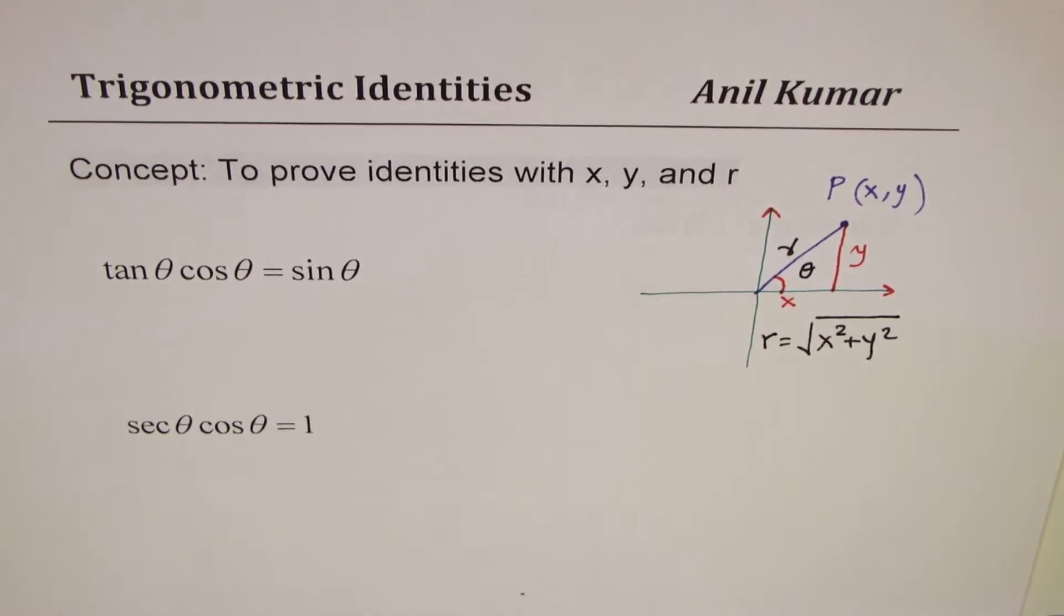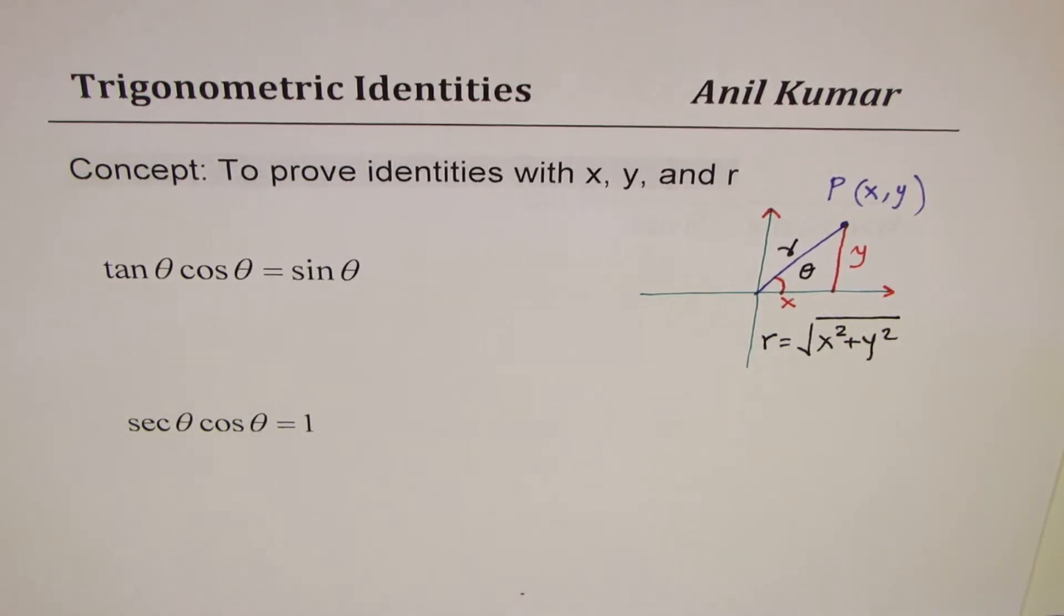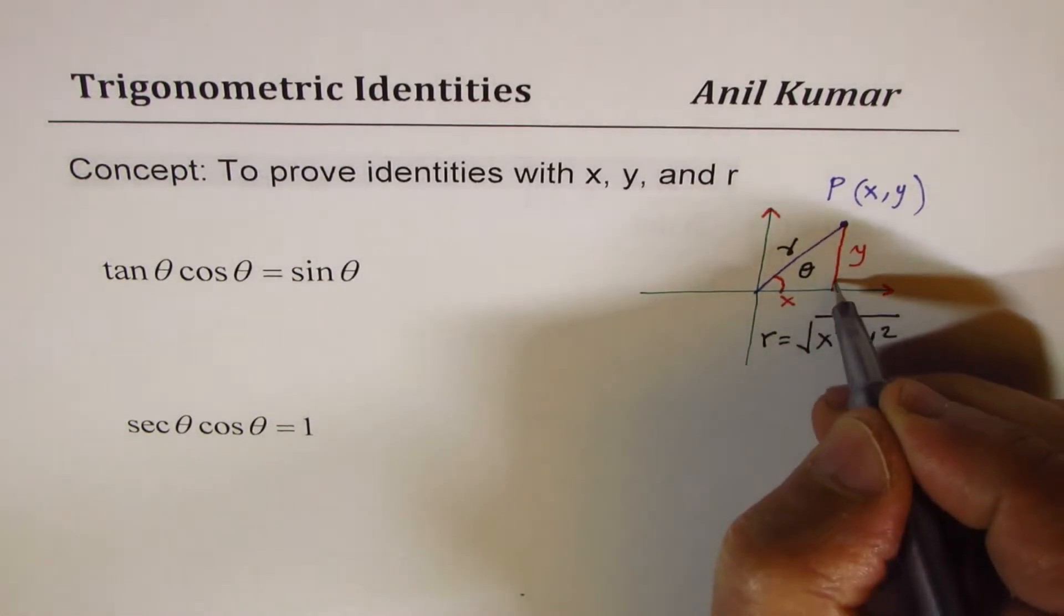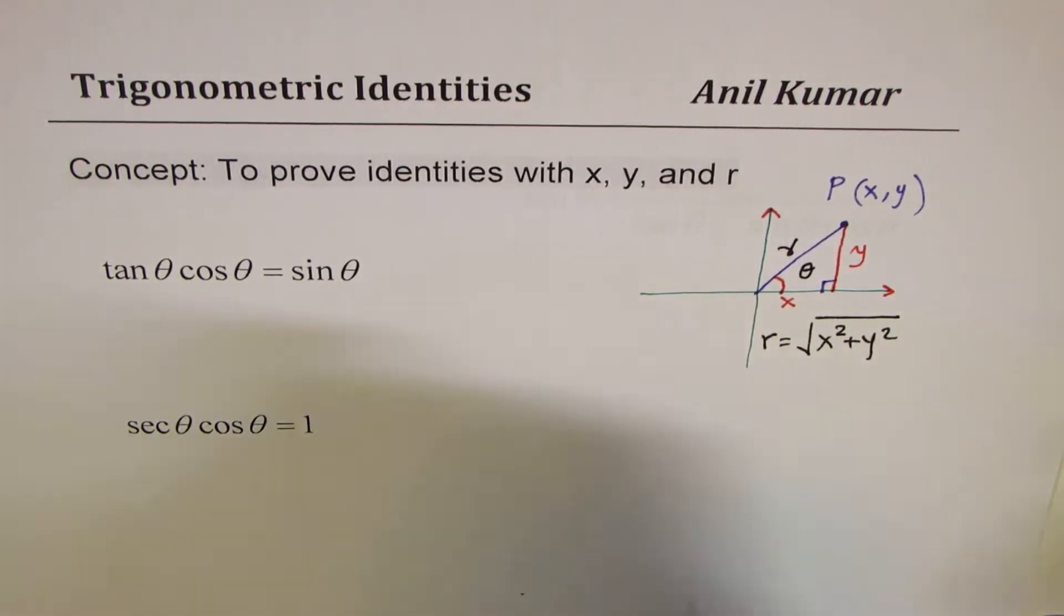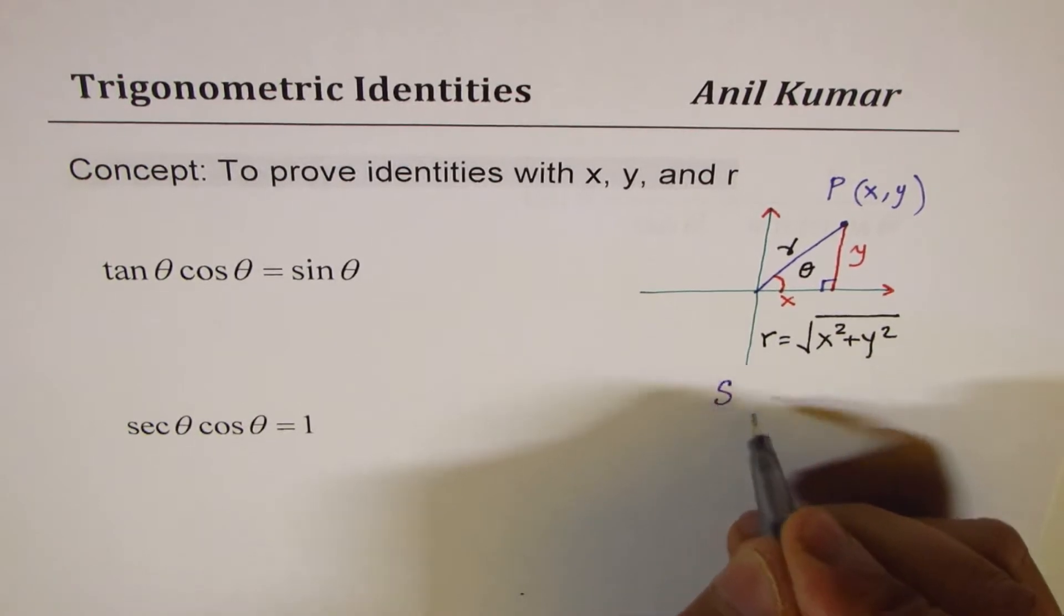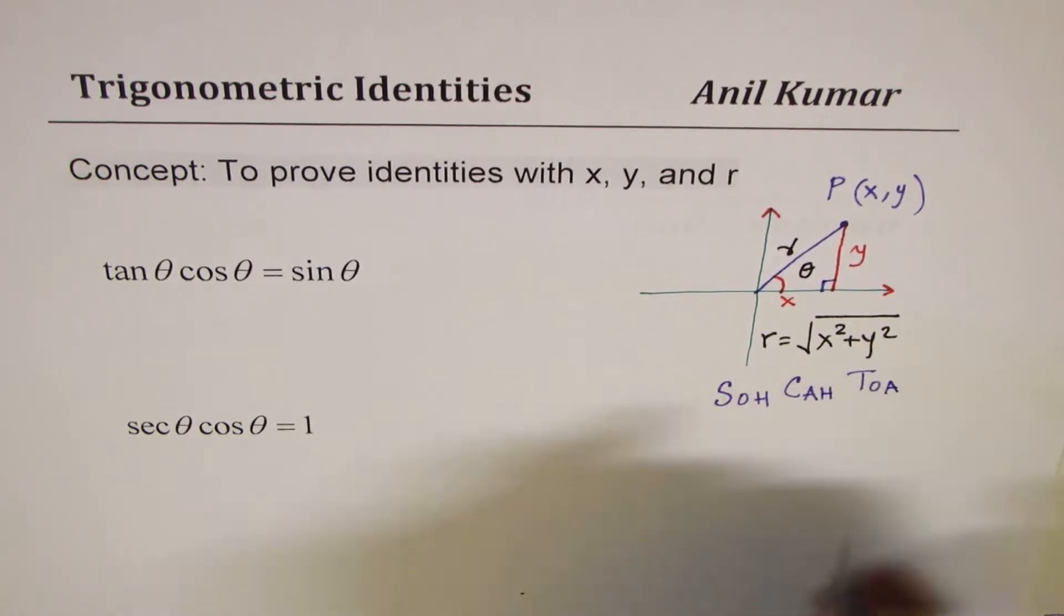Now, let's try to prove these identities using this right triangle. That's the whole idea. We'll use this right triangle to prove the identities. What you know to begin with is sine is ratio of opposite over hypotenuse, cos is adjacent over hypotenuse, and tan is opposite over adjacent.